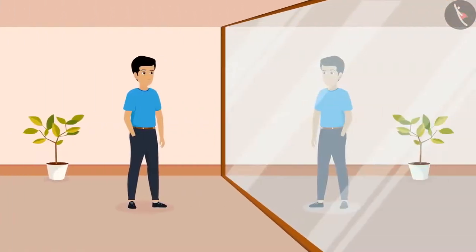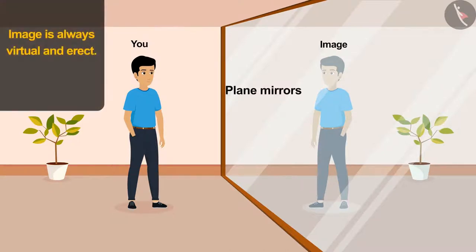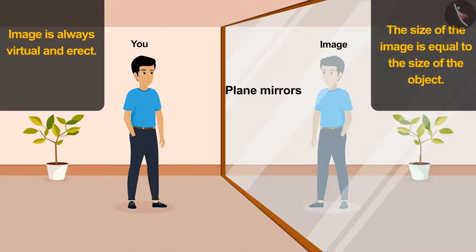Along with that, we are also familiar with the properties of the image formed by plane mirrors. Number 1: The image formed by the plane mirror is always virtual and erect. Number 2: The size of the image formed is always equal to the size of the object.